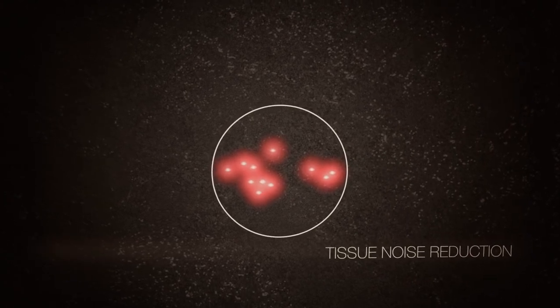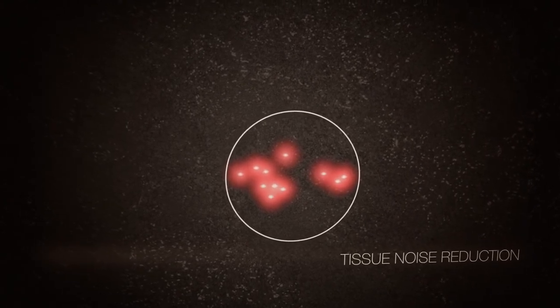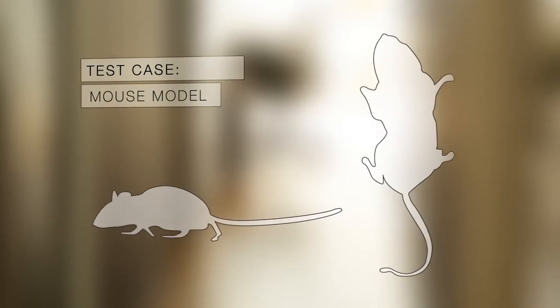Essentially what this all translates to is we can get better signal-to-noise ratio and image deeper into tissue. We've already shown in our early studies a hundred-fold increase over conventional methods. And one way we've displayed this is trying to image lymph nodes in a mouse model.